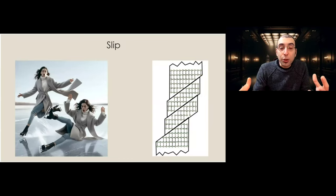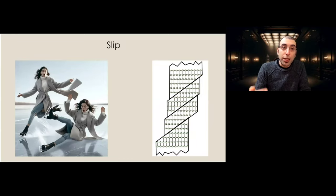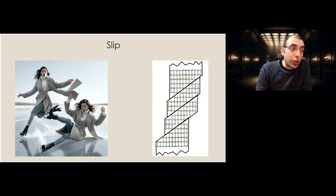Slip is the sliding of atomic planes over each other, which requires more movement of atoms and atomic planes and full mobility of dislocations along the crystal. That concludes the differences between slip and twinning. I hope you learned it. I'll see you.